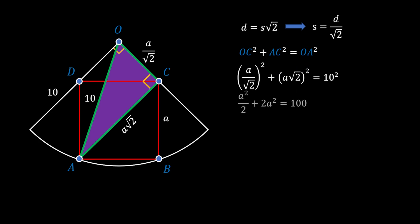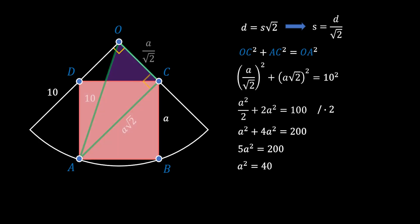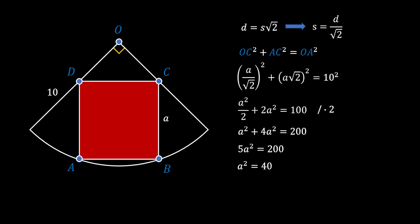Substituting our values, (A/√2)² plus (A√2)² equals 10². Squaring all terms and multiplying through by 2, we get A² plus 4A² equals 200, which means 5A² equals 200, and therefore A² equals 40. The area of the red square equals A² equals 40 square units, and again this is our solution.